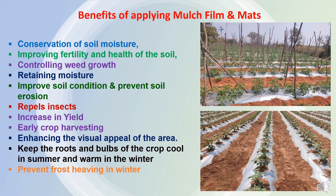There will be an increase in yield, because we are maintaining the moisture for a longer period and application of fertilizer along with irrigation water, and there will be less loss to the fertilizer. Because of mulching, it has been reported there will be early crop harvesting. It will enhance the visual appeal of the area also, and mulching keeps the roots and bulbs of the crop cool in summer and warm in winter, meeting the requirement of the crop. Mulching also prevents frost even in winter season.